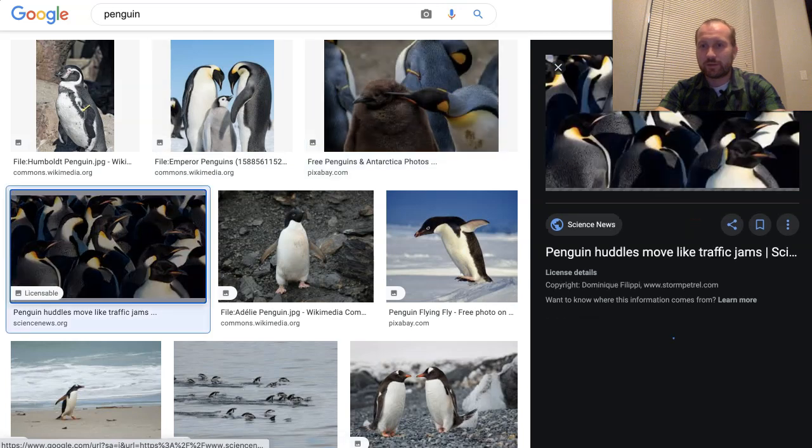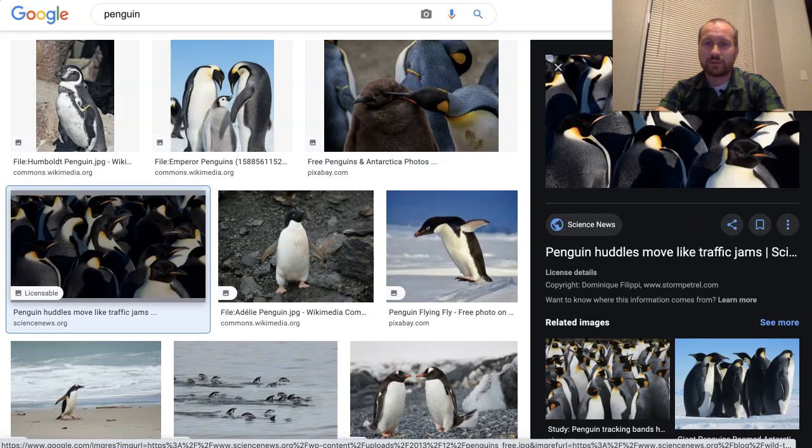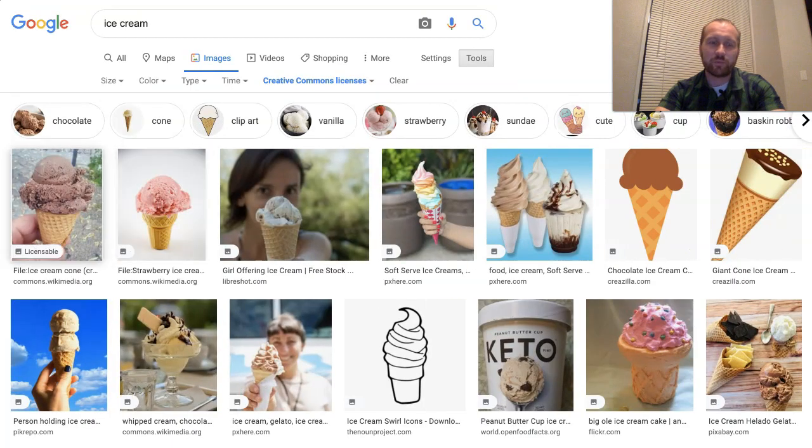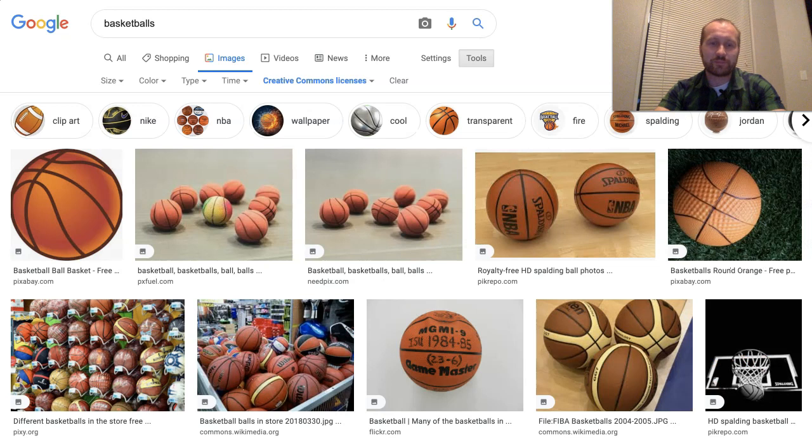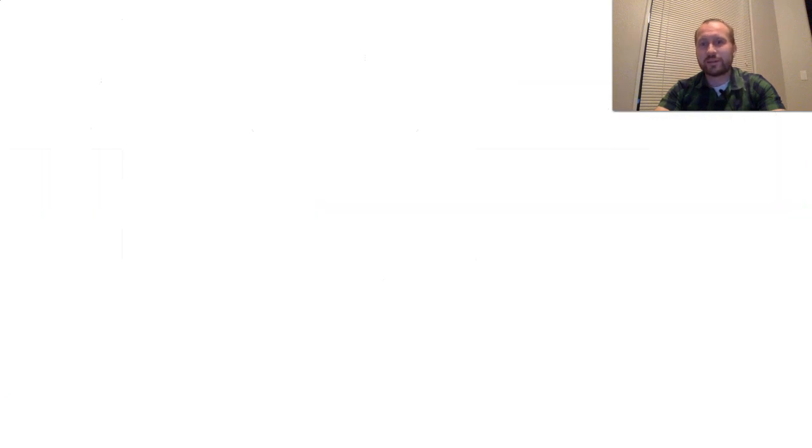The next one, it's a whole lot of penguins, right? But I can do this with anything. Ice cream, one scoop, one scoop, three scoops, three scoops, basketballs. And I could start to even make my own patterns, like this one. Case one, I have one basketball. Two, I have two.